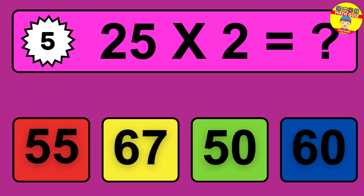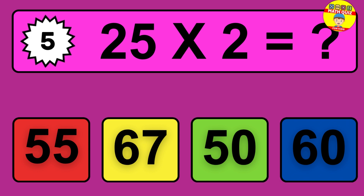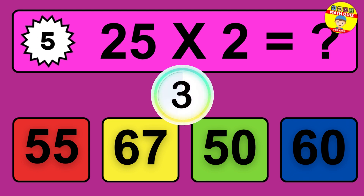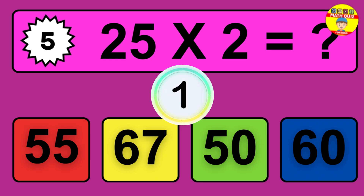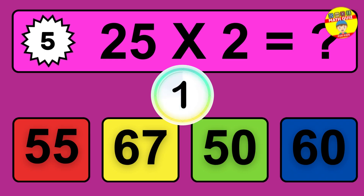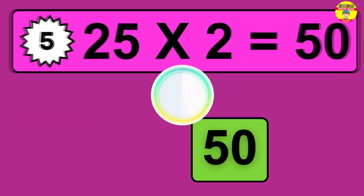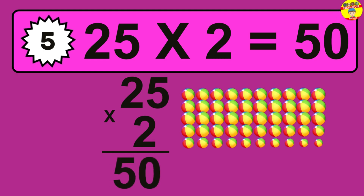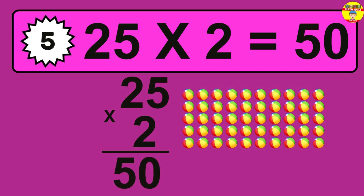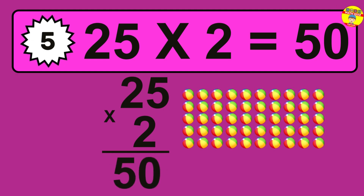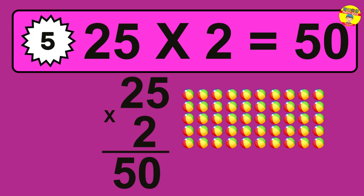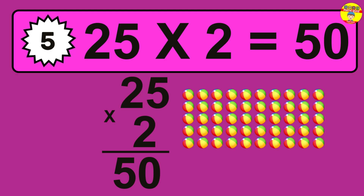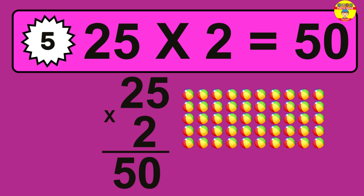Question five: 25 times 2 equals what? The answer is 25 times 2 is 50. To calculate, we have 25 groups with 2 balls each. So how many balls do we have? 50 balls.